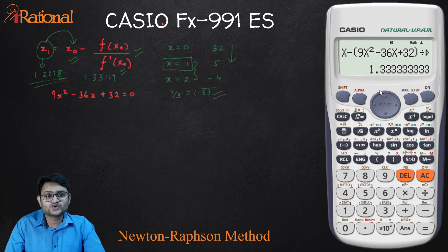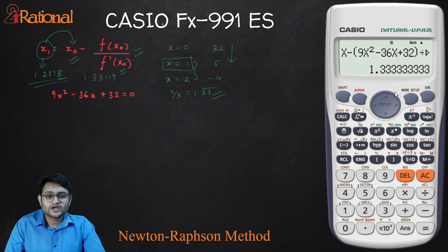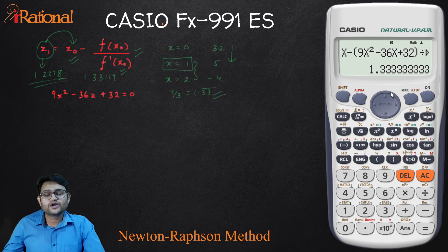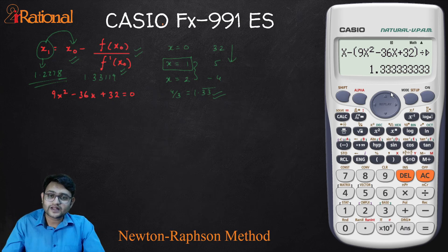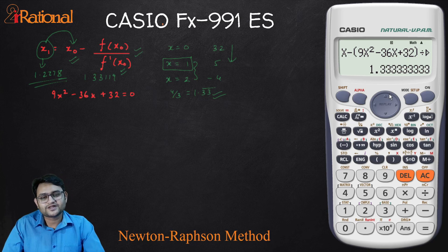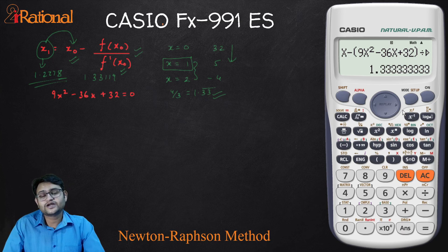To find the next root, you have to check whether the root is going to be between 2 and 3 or 3 and 4 or 4 and 5 or maybe in the negative values. Like we did at the beginning. And then repeat this method again. This is how we can use the calculator and this Newton-Raphson method to find the roots of any equation.